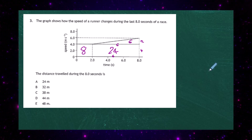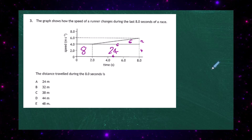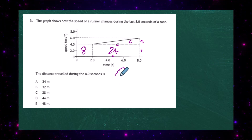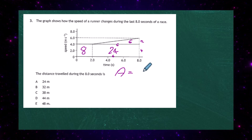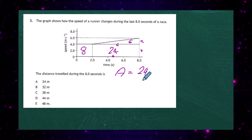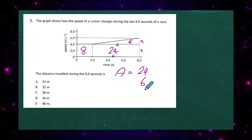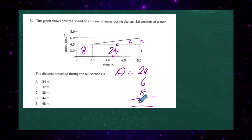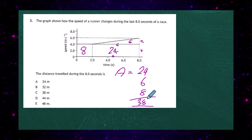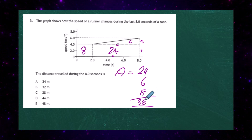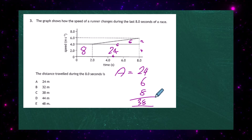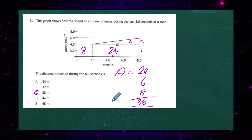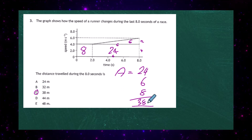Half of 12 gives an area of 6 units for the triangle. The total areas are 8, 24 and 6. Adding them together: 24 + 6 + 8 = 38 units, which converts to a distance of 38 metres. The correct response for question three is C.